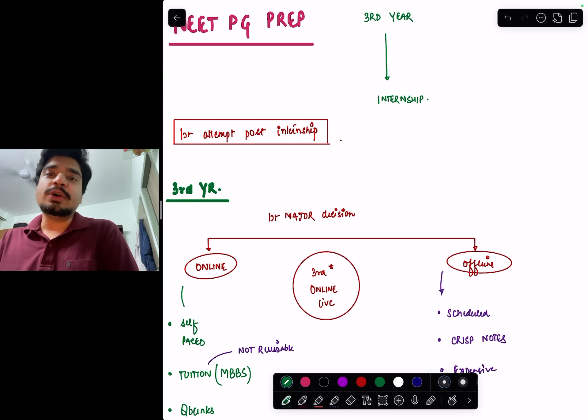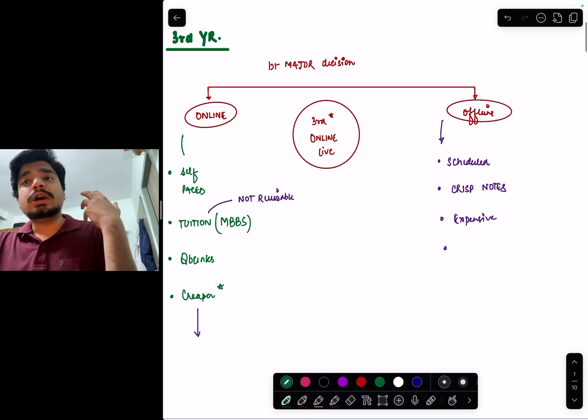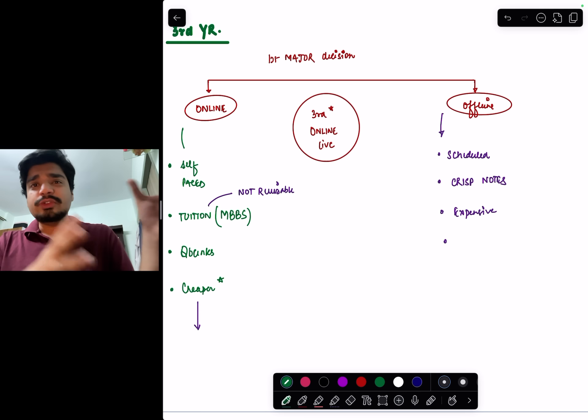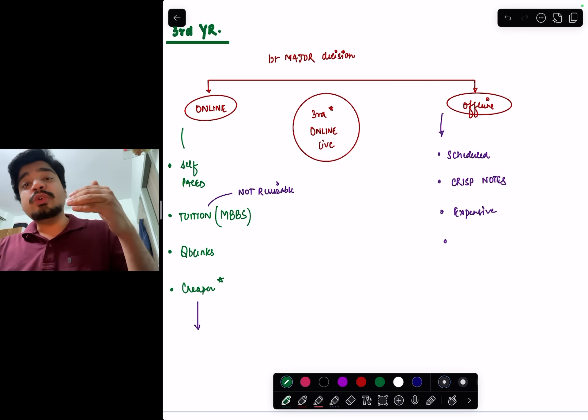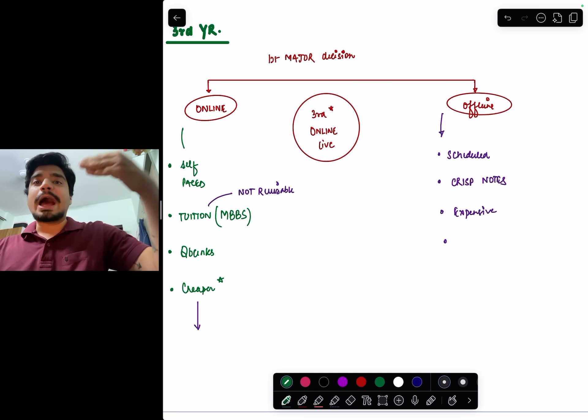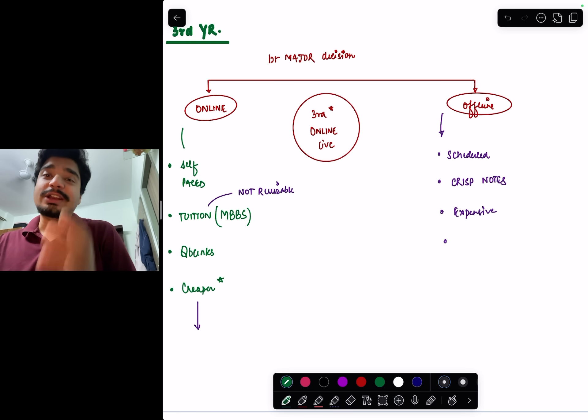In this video I'll talk about how to crack NEET PG from a third year perspective. When you enter third year, the first thing you have to decide is whether you want to do online coaching or offline coaching. Most people prefer online, but I'm of a slightly different opinion. The division should be around 50-50, not 80-20. A lot of you take online platforms, only 20% go to offline coaching. I would say it should be 50-50.